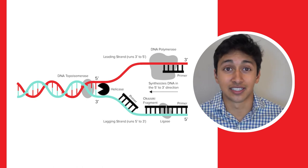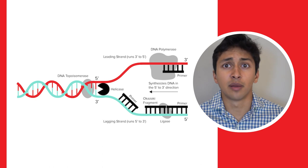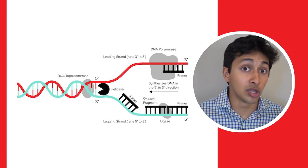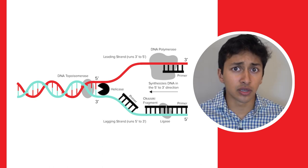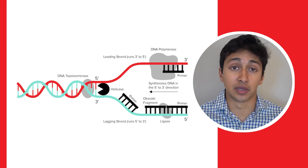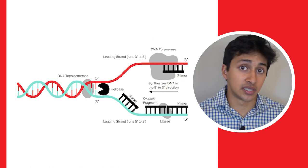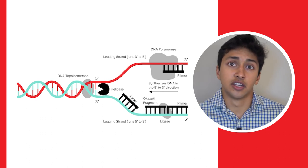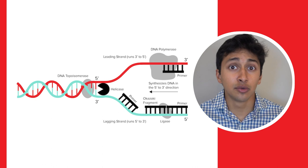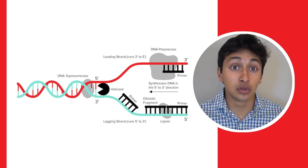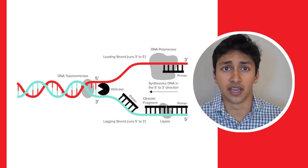These primers are absolutely necessary for DNA to be copied. Without the presence of primers, the next enzyme, DNA polymerase, won't be able to function. DNA polymerase is the workhorse of DNA replication. It's a huge enzyme that continuously adds new nucleotides to the growing chain of DNA. The end product is a long, continuous strand of newly synthesized DNA that's complementary to the original strand of DNA.